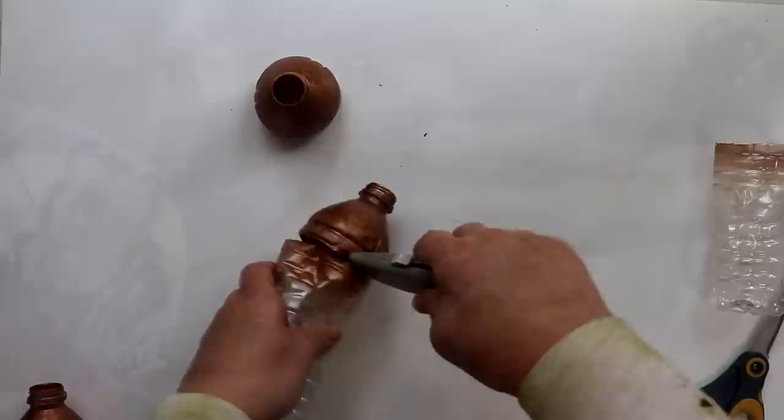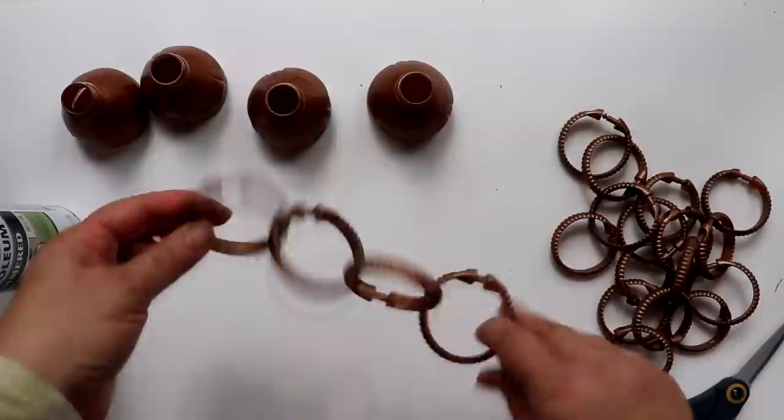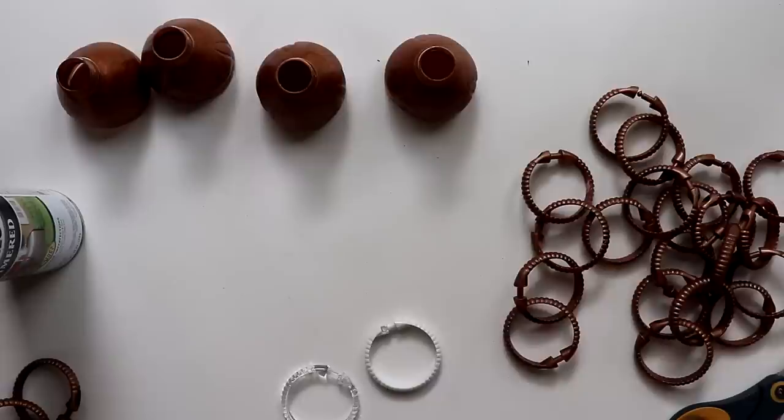Then once the paint was dry I cut the tops off. You can use a utility knife then trim with scissors or just flatten the bottle and cut with scissors then trim. Next I took the shower curtain rings that I had also painted with the same hammered copper spray paint and linked those together. However I just want to point out that I use these rings from Family Dollar instead of the ones I usually get at Dollar Tree.